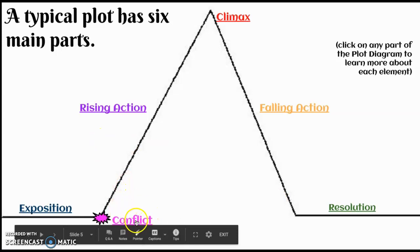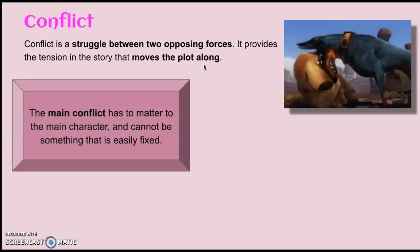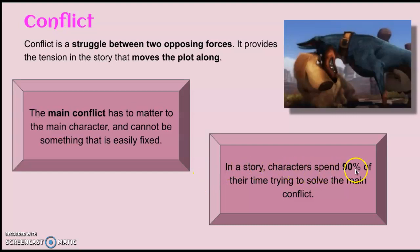Moving along, we're going to talk about conflict. Conflict is really important because it starts the tension — things are kind of cruising until conflict kicks in. Conflict is simply defined as the struggle between two opposing forces. This could be many different types of struggles, and we'll get more into the different types of conflict later. Just know that this is the catalyst, or the start of the tension in the story, and the tension moves the plot along. The main conflict has to matter to the main character, and the problem cannot be something that is easily fixed, because in the story the characters spend about 90% of the story trying to solve the main conflict.